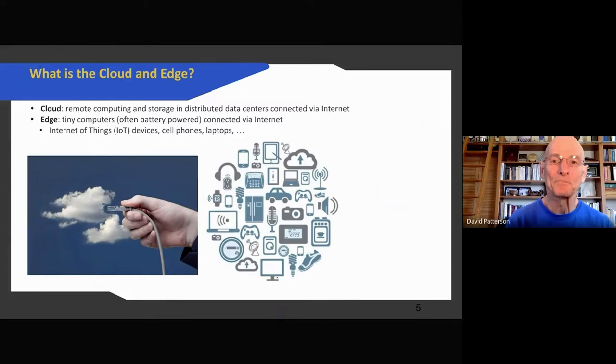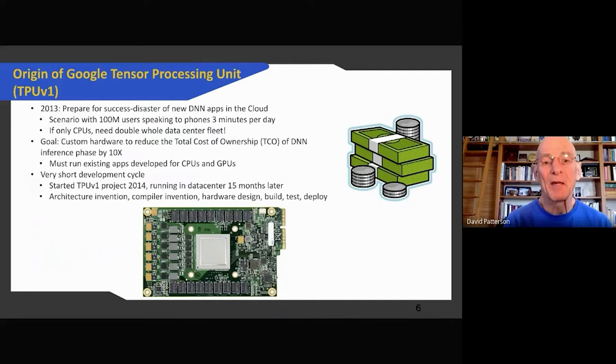Google was one of the first to get excited about both deep neural networks and domain-specific architectures. In 2013, they calculated that if 100 million users started doing deep neural networks three minutes a day on CPUs, they would have to double the size of the data center. Not only would that be very expensive, it would take forever to build twice as many data centers. So they set an emergency project whose goal was to make a factor of 10 improvement over existing CPUs and GPUs, and they gave them very little time because this could happen any day. It was done in just 15 months from ideas to working hardware and software.